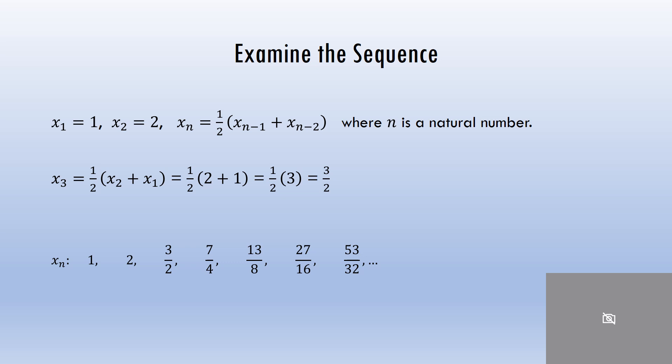If you're not convinced that all these numbers are between 1 and 2, I've found the decimal form of these numbers. As you can see, all these numbers are greater than or equal to 1 and less than or equal to 2. Now that we know it seems reasonable, let's go back to our induction method and prove that this will always be the case, because I can't just go on forever listing all the numbers in this sequence.